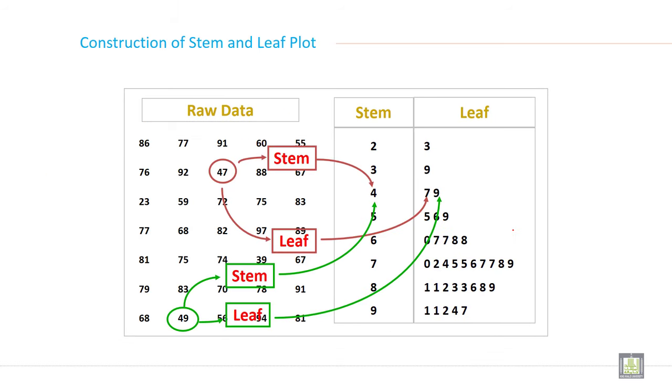Construction of stem and leaf: this is the method explained from this slide. Here, for example, 47, so write 4 in the stem and 7 in the units. Then 49, for example, so write 4, already written here, don't write again, only write 9 to the next. So in the 40s, only two information is there, so write only 7 and 9. This is the procedure to make a stem and leaf plot.